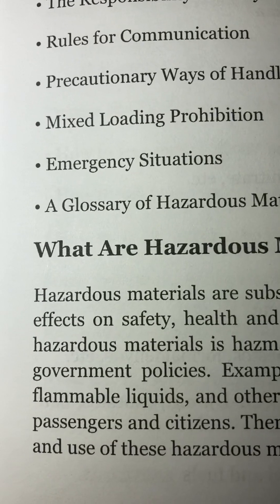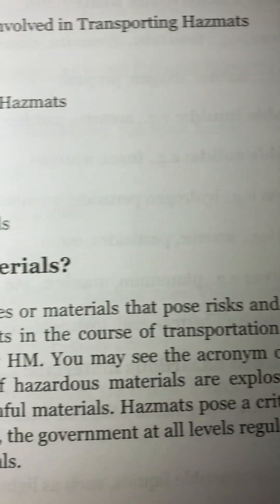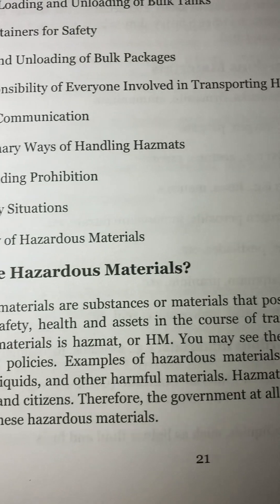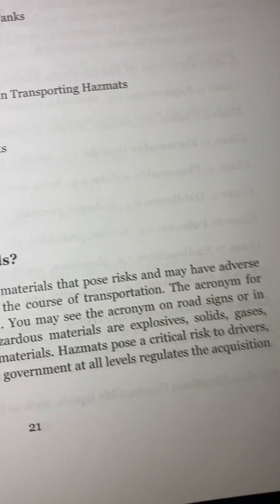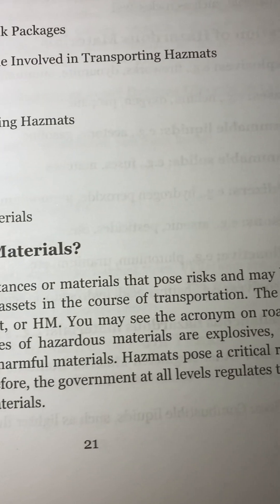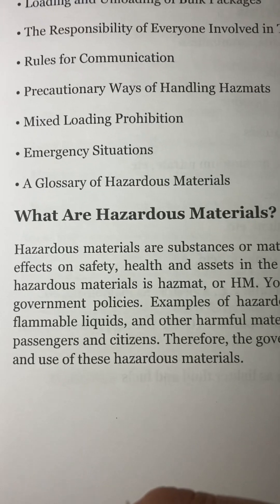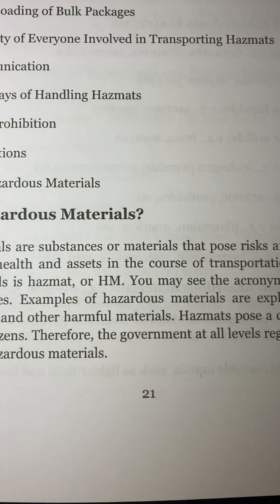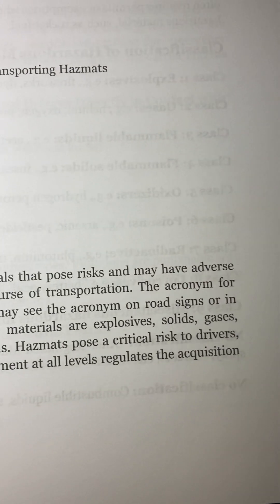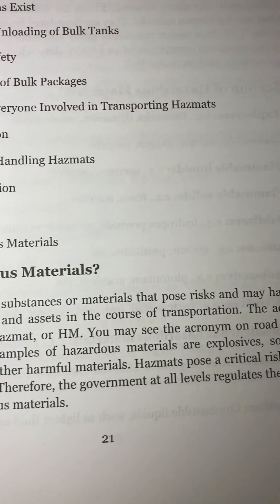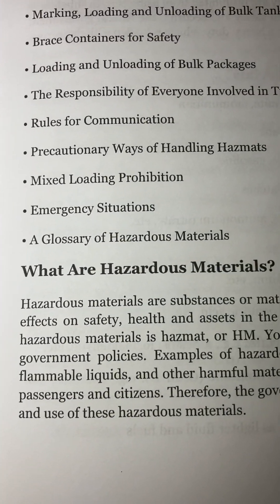What are hazardous materials? Hazardous materials are substances or materials that pose risks and may have adverse effects on safety, health, and assets in the course of transportation. The acronym for hazardous materials is HAZMAT or HM. You may see the acronym on road signs or in government policies. Examples of hazardous materials are explosives, solids, gases, flammable liquids, and other harmful materials. Hazmats pose a critical risk to drivers, passengers, and citizens. Therefore, the government at all levels regulates the acquisition and use of these hazardous materials.